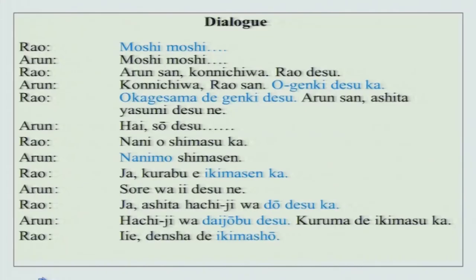Did you understand something? This is a conversation between two people. Moshi moshi, moshi moshi — Arun-san konnichiwa, Rao desu, konnichiwa Rao-san, o genki desu ka, okage-sama de genki desu. Arun-san, ashita yasumi desu ne. Hai, so desu. Nani wo shimasu ka? Nani mo shimasen. Jaa kurabu e ikimasen ka? Sore wa ii desu ne. Jaa ashita hachi ji wa dou desu ka? Hachi ji wa daijobu desu. Kuruma de ikimasu ka? Iie, densha de ikimashou.